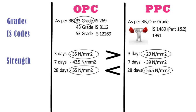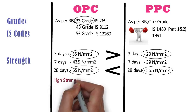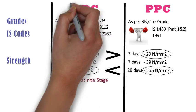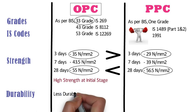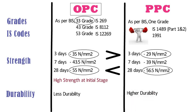So if you need high strength at the initial stage, go for OPC. Durability. The durability of concrete made using OPC cement is less than that of concrete made using PPC cement, whereas the durability of concrete made using PPC is higher than OPC, which means the structure made up of PPC will last longer.